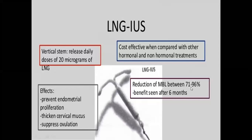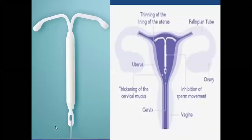Mirena's effects are: it prevents endometrial proliferation by causing atrophic changes in the endometrium, thickens the cervical mucus, and suppresses ovulation. It controls heavy menstrual bleeding by causing atrophic endometrium and also acts as a contraceptive — it inhibits sperm movement by thickening the cervical mucus and thinning of the endometrium.